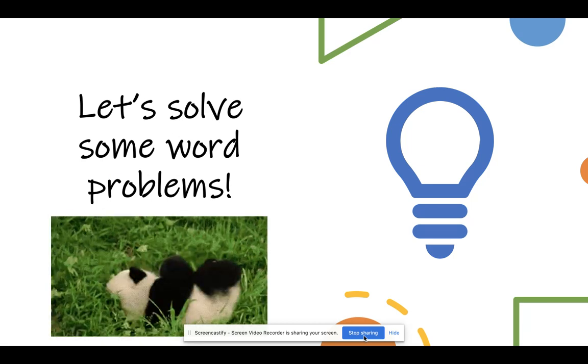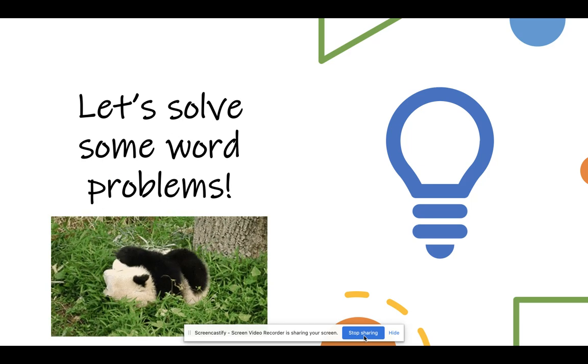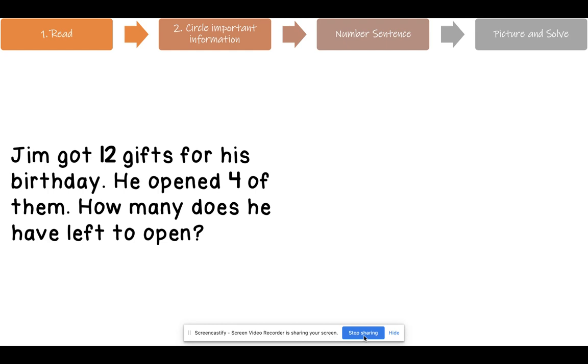So let's go ahead and solve some word problems. Are you ready? Let's go. Jim got 12 gifts for his birthday. He opened 4 of them. How many does he have left to open? Remember that the first step was read. That's why I went ahead and read it for you. Now we have to circle our important information. What do you see here that's important? Good. I hope you said 12 and 4 and opened. And of course, the question, how many does he have left to open? Left is a very good keyword that lets us know that we need to subtract.